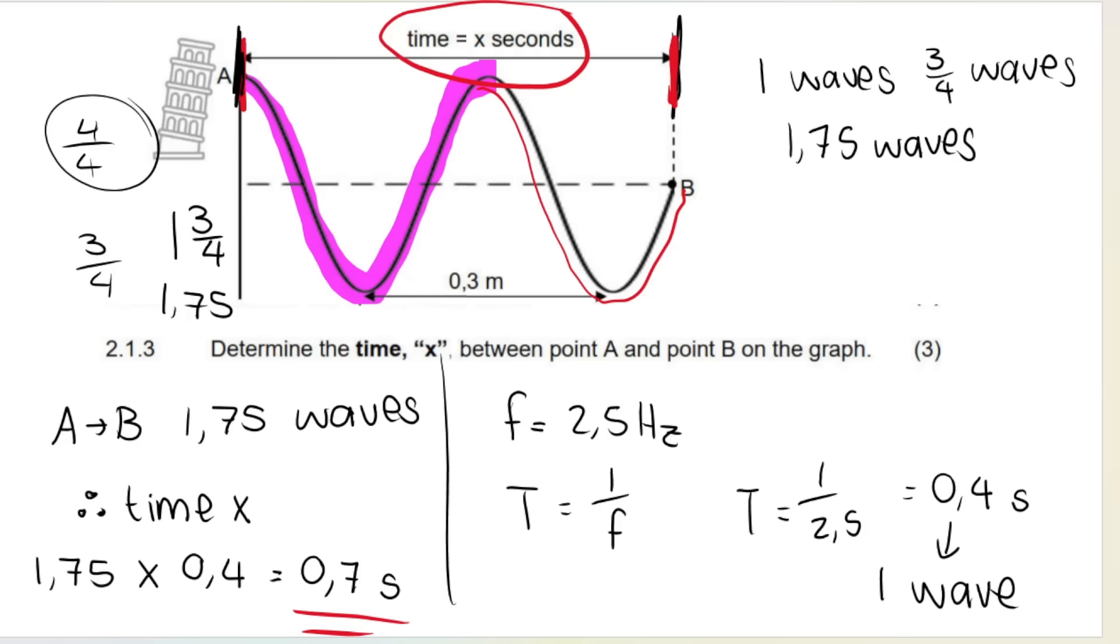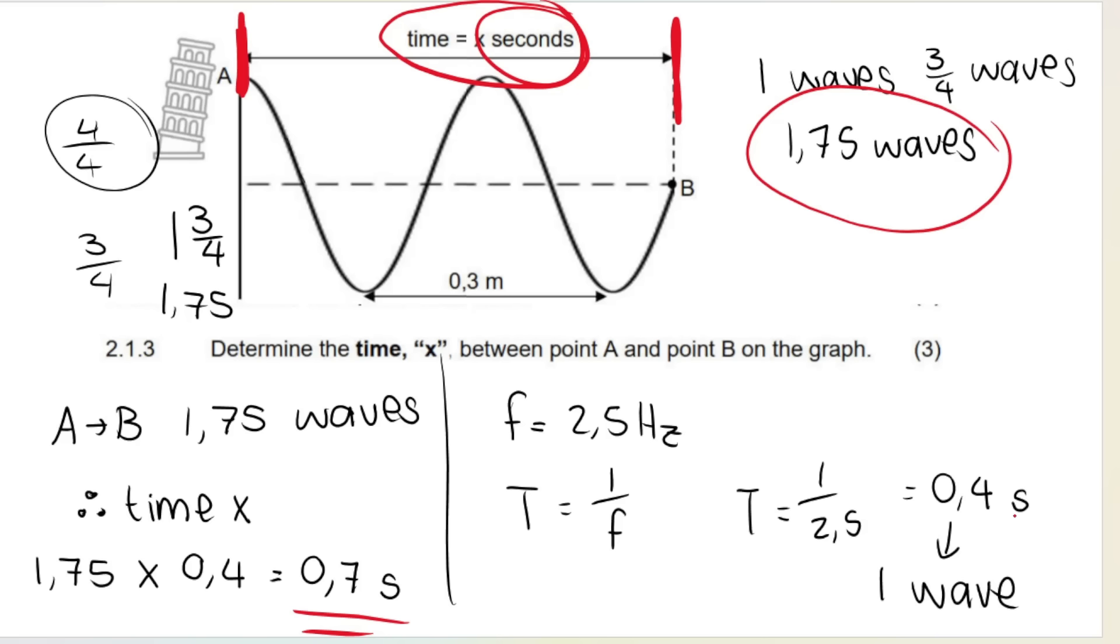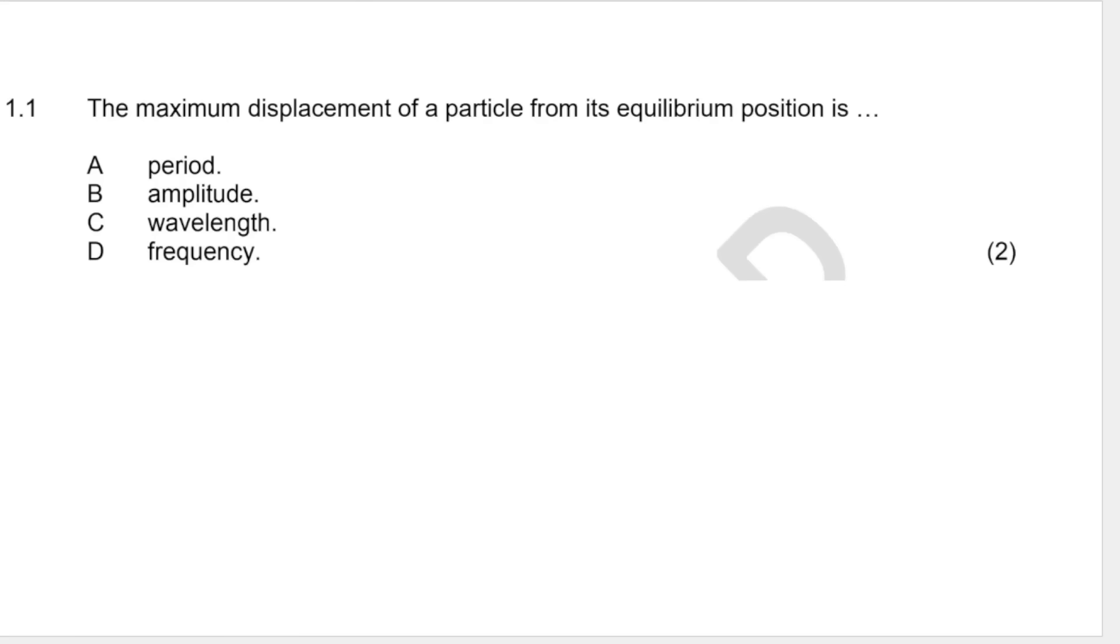So the method basically is work out how many waves you have for your distance or your time. So for x seconds there's 1.75 waves. You multiply the number of waves by the period of the wave, if you're looking for time in seconds. Because period is measured in seconds. That is slightly more difficult, but I hope that that explanation has helped. Here's a multiple choice question to switch things up. The maximum displacement of a particle from its equilibrium position. Remember equilibrium position is this line over here. The maximum displacement from its equilibrium position is referring to this. And that is the amplitude.